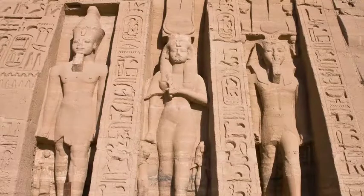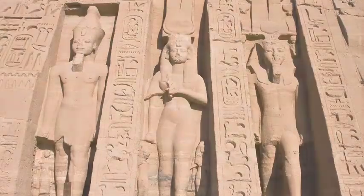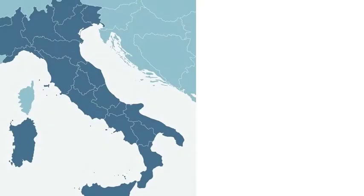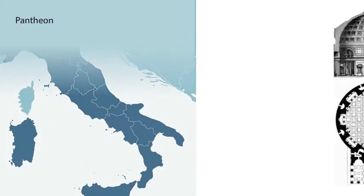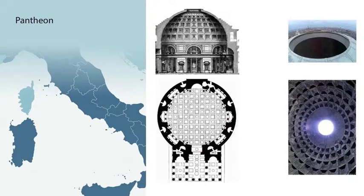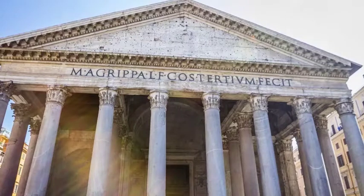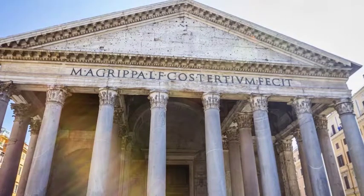The next example is the Pantheon, located in Rome, Italy. The interior of the dome was possibly intended to symbolize the arched vault of the heavens. The oculus at the dome's apex and the entry door are the only sources of light in the interior.